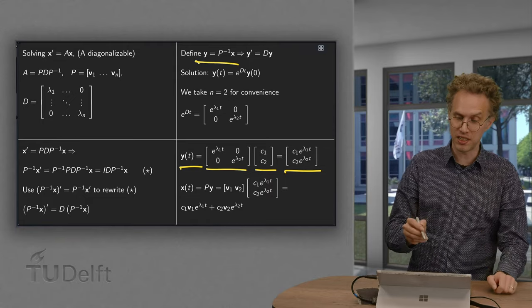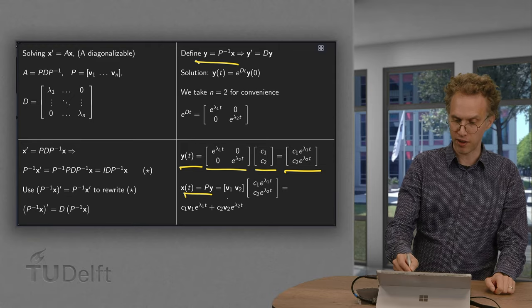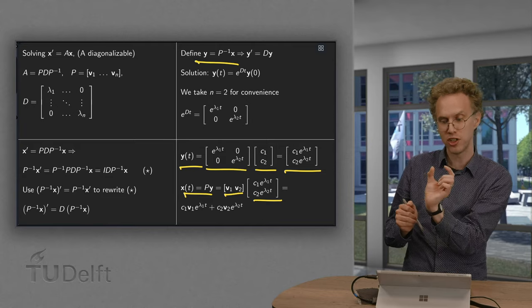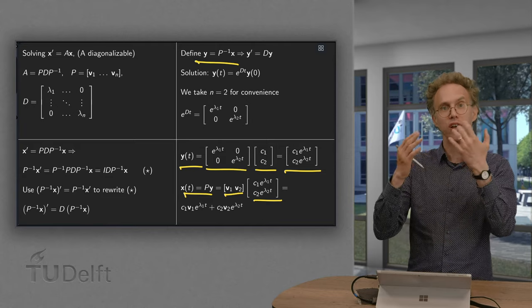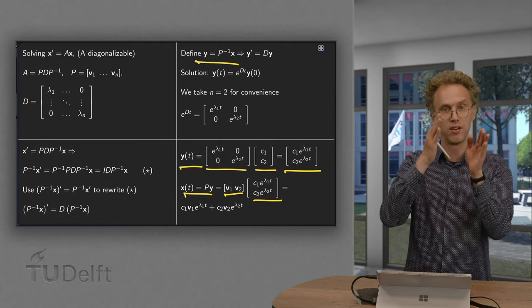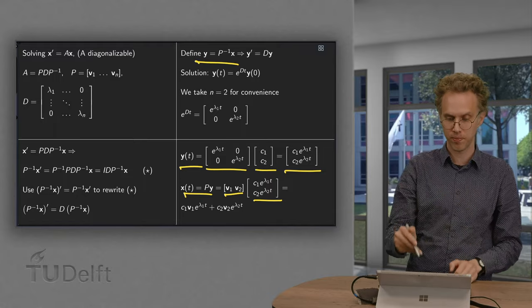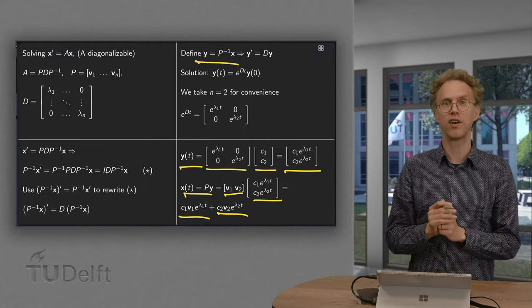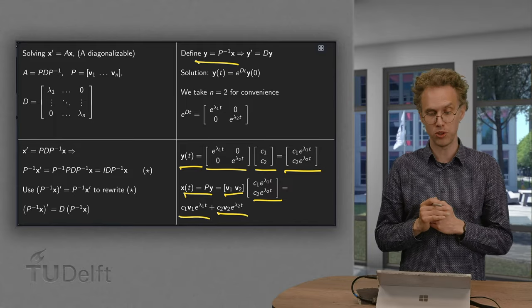And here we have our p. And here we have our y with components c1 e to the power lambda 1t, c2 e to the power lambda 2t. So if we compute this product we get first factor times first scalar plus second factor times second scalar. So there we have our general solution.